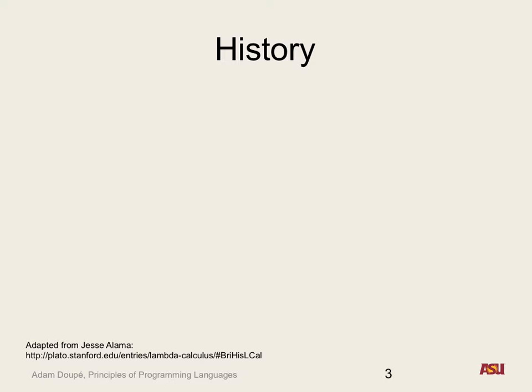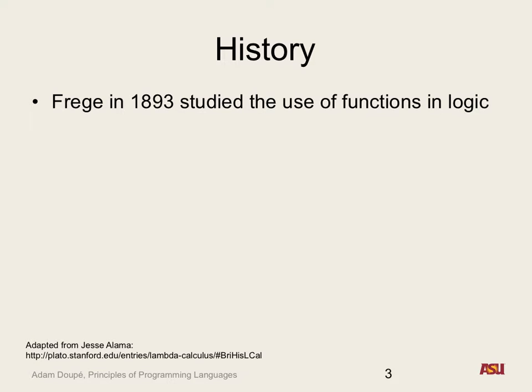A lot of times we don't actually get to go into the history behind the things we talk about. This line of thinking goes back all the way to 1893. There are a bunch of names here — Frege studied the use of functions in logic: can you represent logical operators like OR, AND, NOT as functions? Then Schoenfinkel in the 1920s studied how a specific type of function in Lambda Calculus, called combinators, can be applied to formal logic.